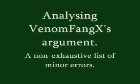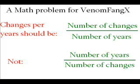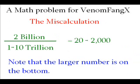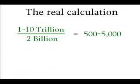There are a number of minor problems here that I will quickly point out. Firstly, the maths for working out the changes per year is wrong. Instead of dividing the number of changes by the number of years, VenomfangX did it the other way around. He then miscalculated when using these numbers by a factor of about a hundred thousand. In the end, however, this is largely moot because his result is in the right ballpark. The answer he should have had is 500 to 5,000 changes a year.